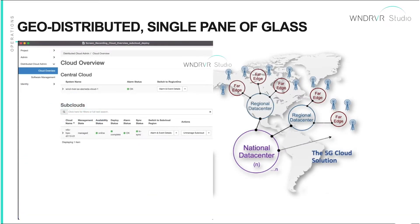Now we're going to look at the same process from the perspective of the UI. This would be running in the regional data center, and it could be commanded from the national data center. Each regional data center is going to have up to 1,000 edge devices. What we're looking at right now is from the regional data center. There is already an edge device deployed in the system. When we run the commands from the previous CLI demo to deploy a second system, we will see a second system come into play.